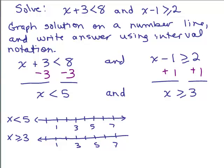If x is less than 5, using interval notation we would have a parenthesis right at 5 going to the left — all numbers less than 5 go that way. Now I also want to graph x greater than or equal to 3. Greater than or equal to 3 means x is either greater than 3 or equal to 3. If it's equal to 3, you use a bracket in interval notation, going to the right. We're trying to find where the overlap is because of the word 'and', so when you see 'and', you look at the overlap.